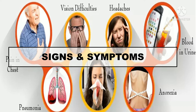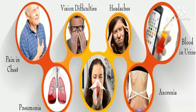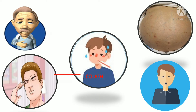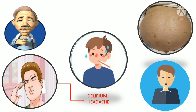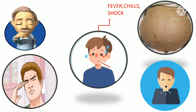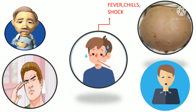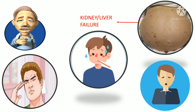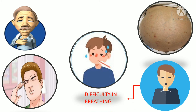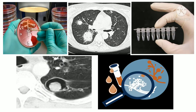The signs and symptoms of aspergillosis include pain in the chest, vision difficulties, headaches, blood in urine, pneumonia, blood in sputum, and anorexia. Other symptoms include cough, delirium, headache, fever, chills, shock, kidney or liver failure, and difficulty in breathing.